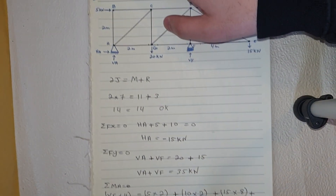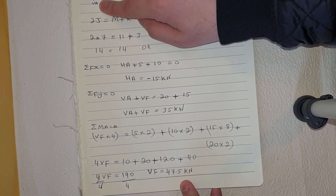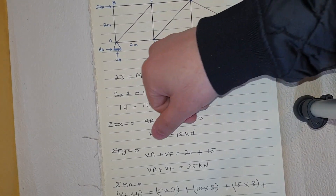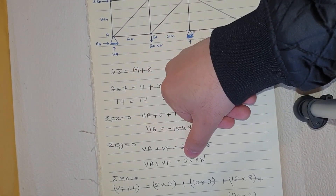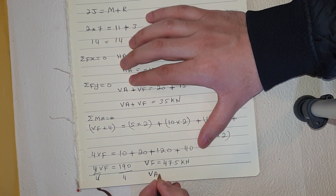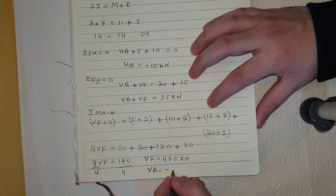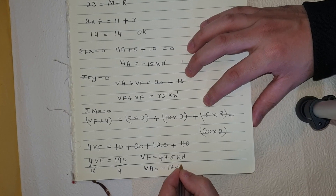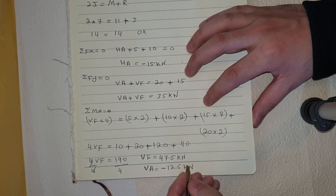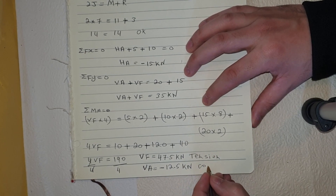Now finding VA: since VA + VF = 35 kN, VA = 35 − 47.5 = −12.5 kN. Positive values indicate tension and negative values indicate compression.